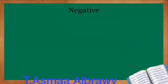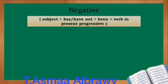For the negative sentences, we simply add not after the auxiliary verbs has or have. So the pattern will now be: subject, plus has or have not, plus been, plus verb in present progressive.